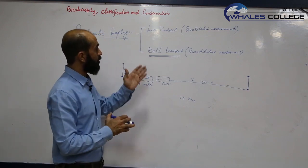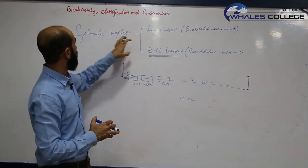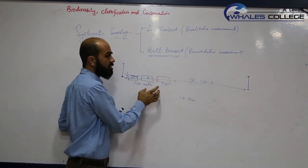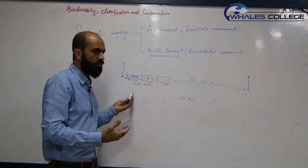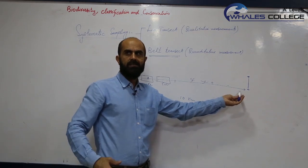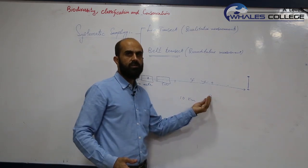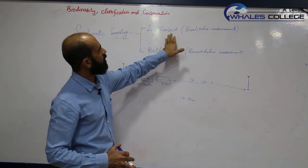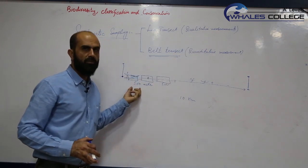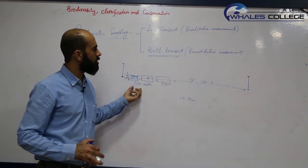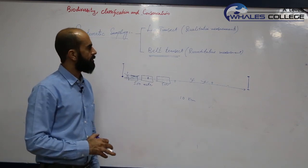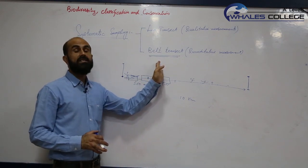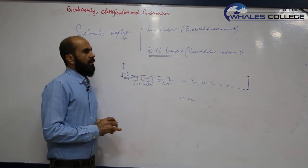We count how many organisms in a particular area are present, how dense they are. Belt transect and line transect both belong to systematic sampling. The only difference is that in belt transect we do quantitative measurement - we count the number of individuals of each species with the passage of distance. In line transect we use qualitative measurement - we never count the number of individuals but just look at the changes in the organisms.